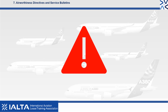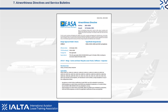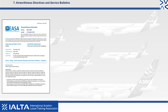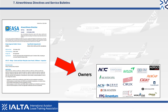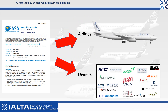Airworthiness directives, or ADs, are issued when an unsafe condition is found to exist in an aircraft or the engines, or an individual component fitted to either the aircraft or the engines. ADs are a notification to aircraft owners and operators of unsafe conditions and will reference an action required to resolve those conditions.